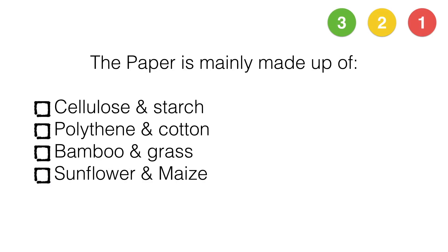The paper is mainly made up of: cellulose and starch, polythene and cotton, bamboo and grass, sunflower and maize.